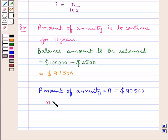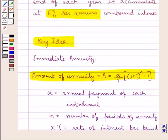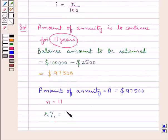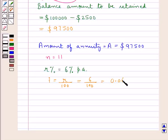N would be equal to 11, as the amount of annuity is to continue for 11 years. Next, r% is given as 6% per annum. So i is equal to r upon 100, that is equal to 6 upon 100, which is equal to 0.06.